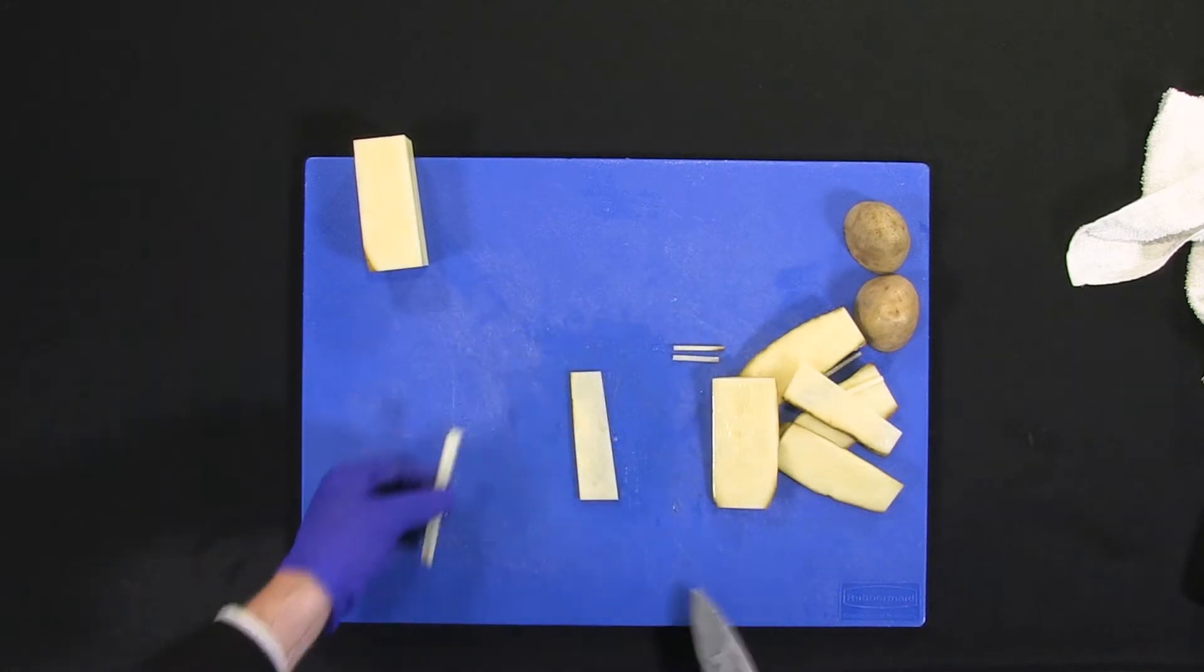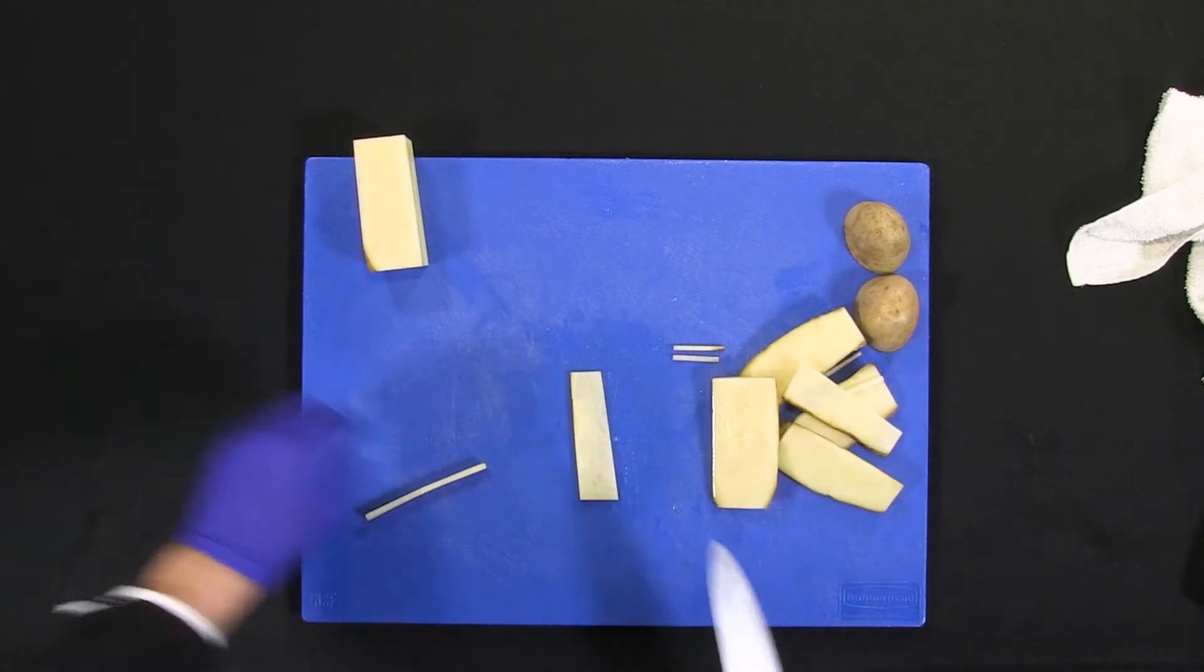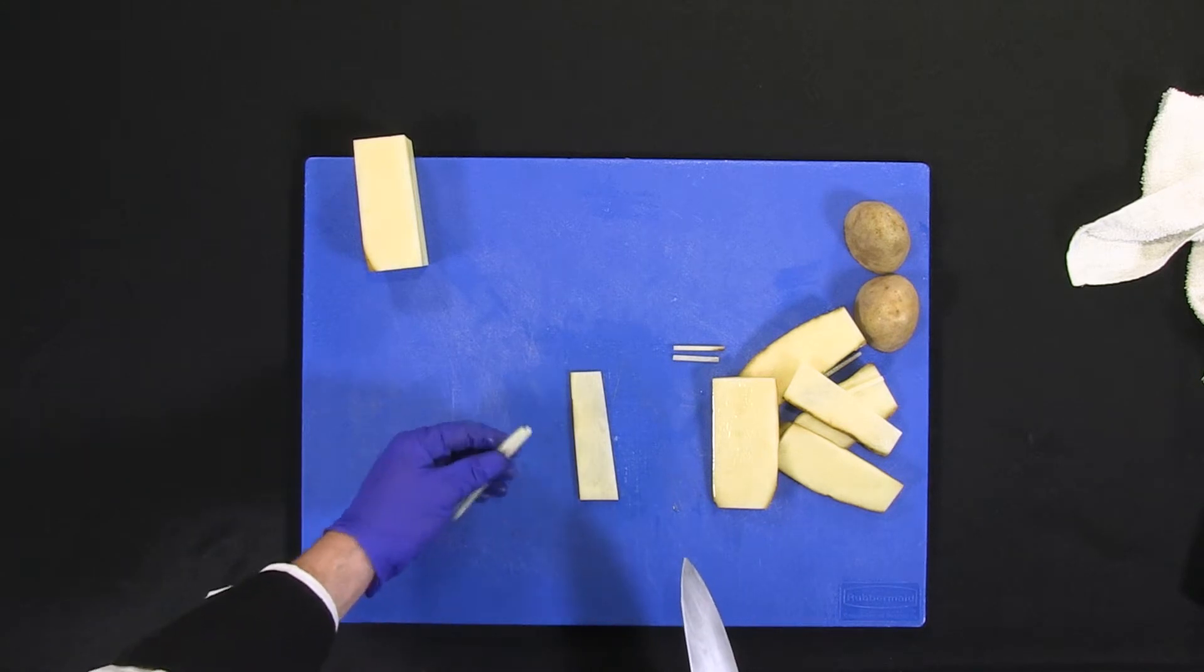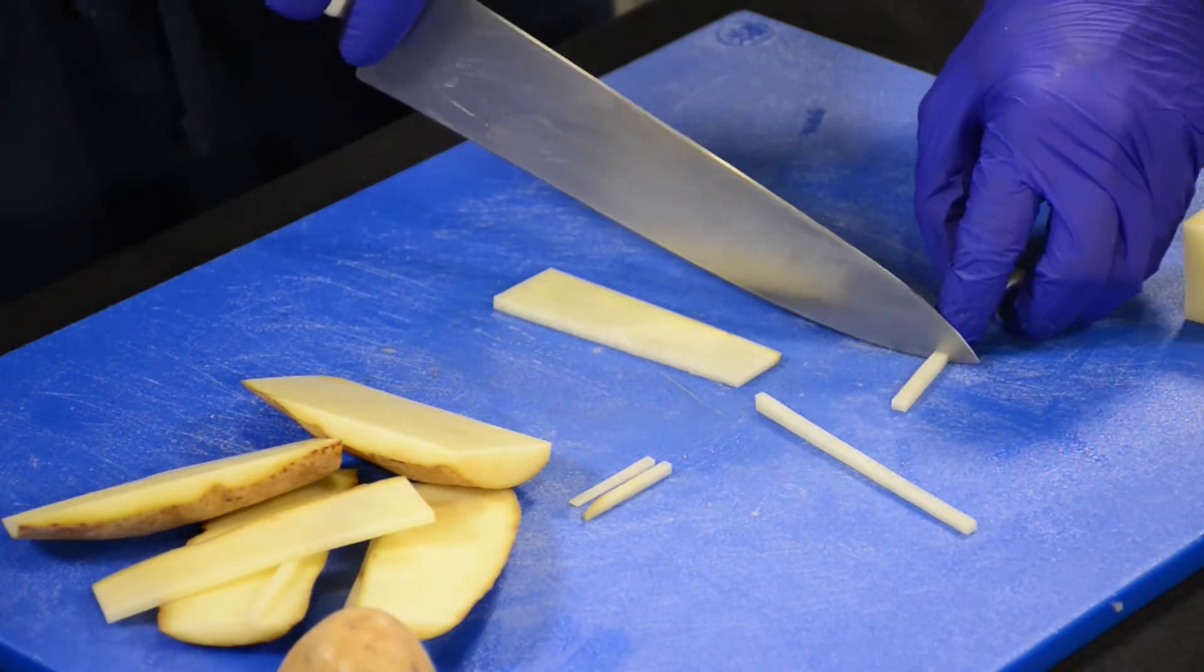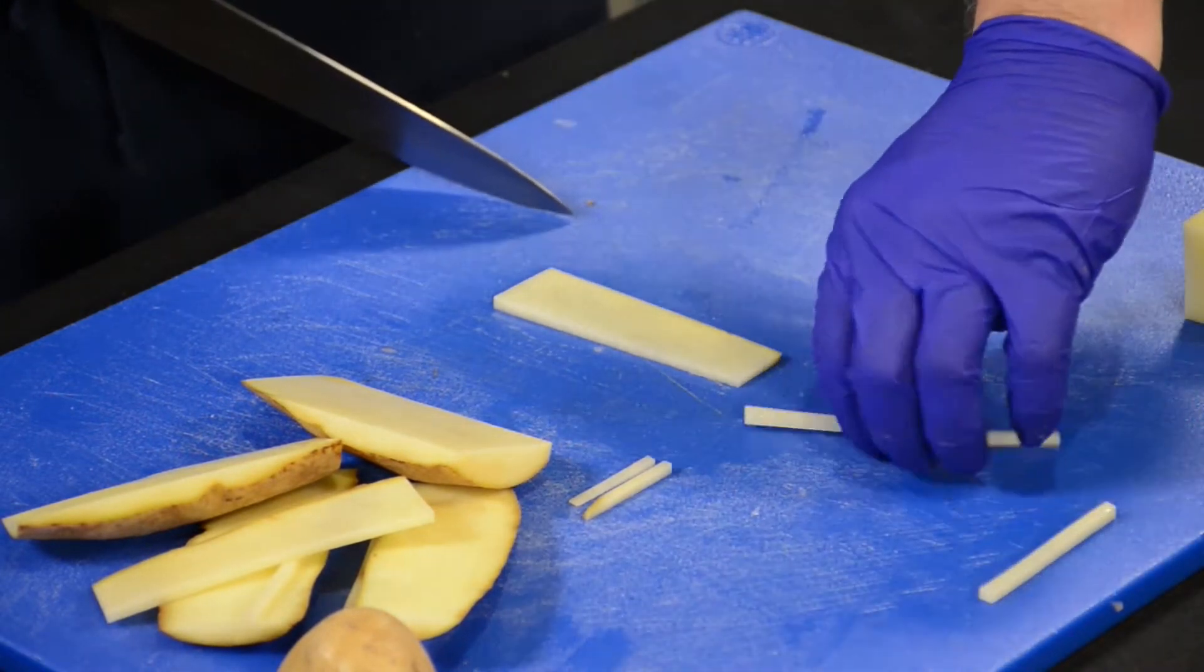Also make sure your cutting board is not wobbly, that it doesn't have a curve or it's not warped. That is a very long julienne. The standard julienne is two and a half inches. It will be right there.